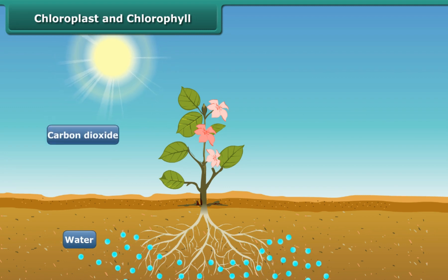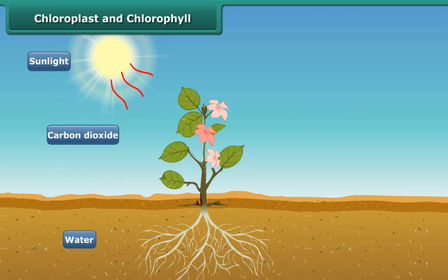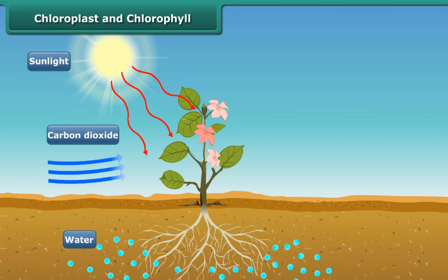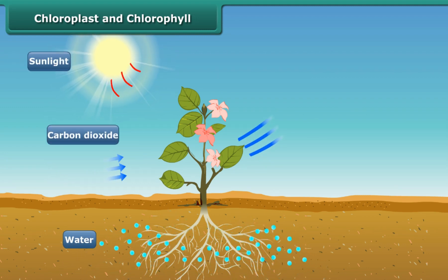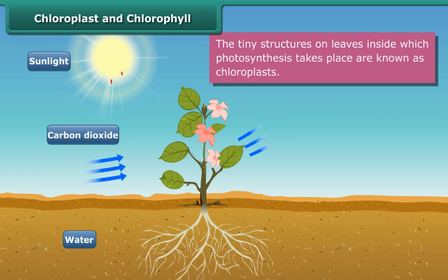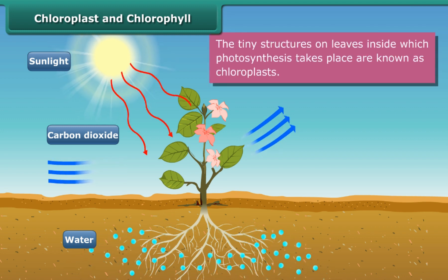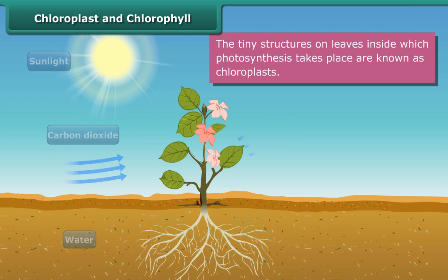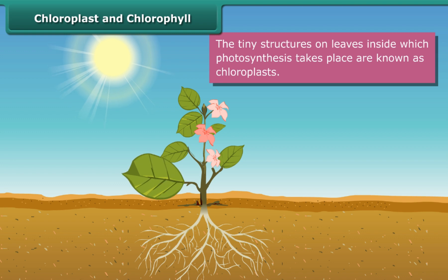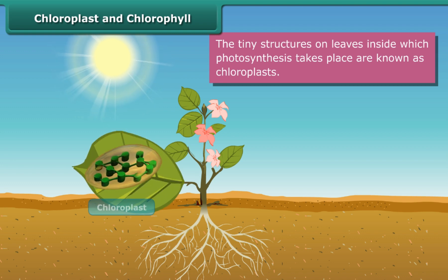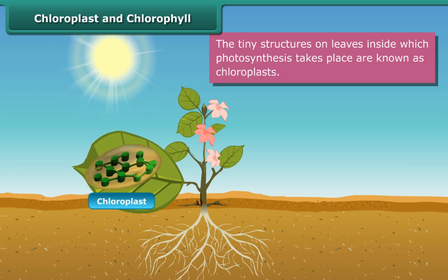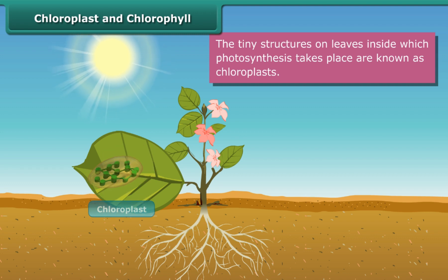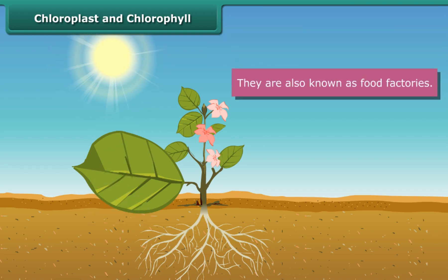Leaves make their food with the help of photosynthesis. The tiny structures on leaves inside which photosynthesis takes place are known as chloroplasts. Due to their role in food production, they are also known as food factories.